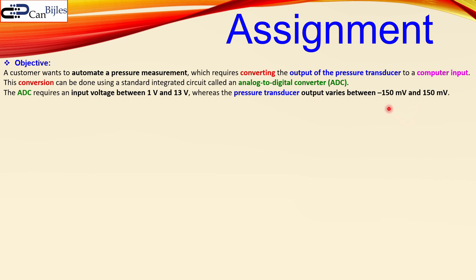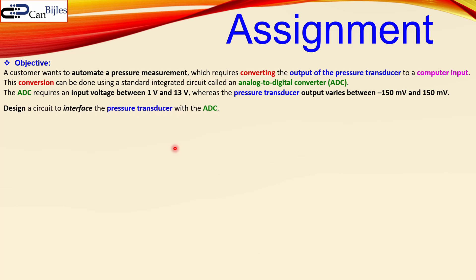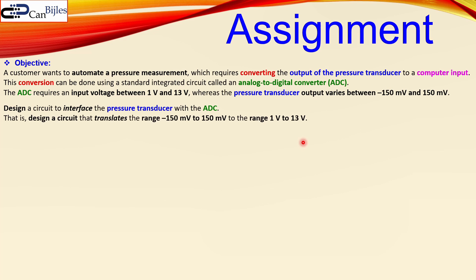You can already see that the sensor output is symmetrical and the ADC input is not symmetrical — we will see that in detail shortly. The design we need to make is the interface: design a circuit to interface the pressure transducer with the ADC. There are requirements for the ADC input and for what we get from the pressure transducer. We need to design a circuit that translates the voltage range of minus 150 millivolts to plus 150 millivolts into 1 volt to 13 volts.